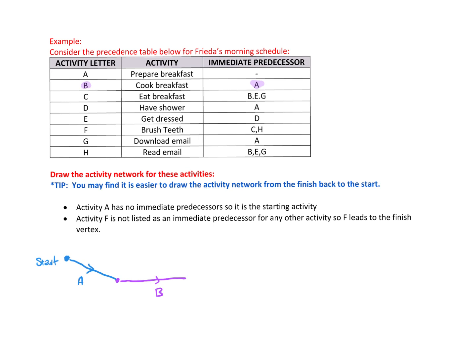Then looking at C, what happens before C is B, E, and G. So I know B leads into C — I'll place C there. But E is also a predecessor to C, so I'll add E. And G is also a predecessor, so I'll draw G as well. I don't know exactly where they've come from yet, so I'll keep going.